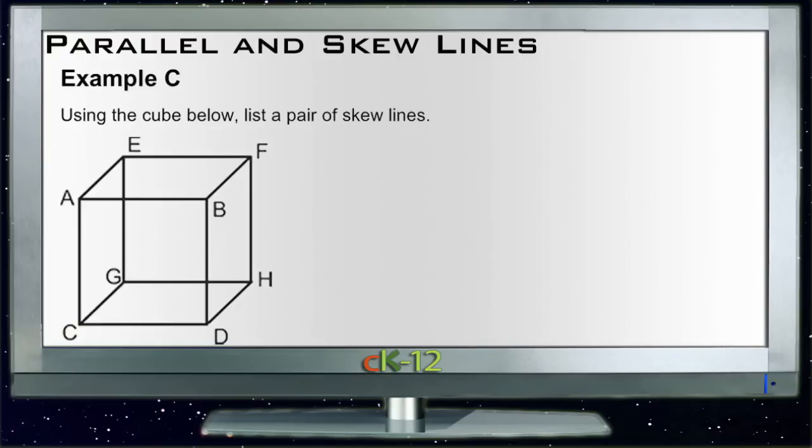Now let's take a look at C. C says, using the cube below, list a pair of skew lines. Well that's easy, we did that the very first one here, right? So we could say maybe line AB, so across here.